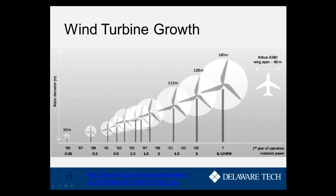Wind turbines have had enormous growth over the years. On the y-axis is rotor diameter; on the x-axis are years brought into service and power in megawatts. Since 1985, turbines have grown from 0.05 megawatts to 5 megawatts in just 20 years — a 100-fold improvement. The cutting edge now is in the 8 to 10 megawatt range. To get a sense of scale, the wingspan of an Airbus A380 is shown on the same picture next to one of these wind turbines. These are massive machines, and if you ever get a chance to see one, I highly recommend it.